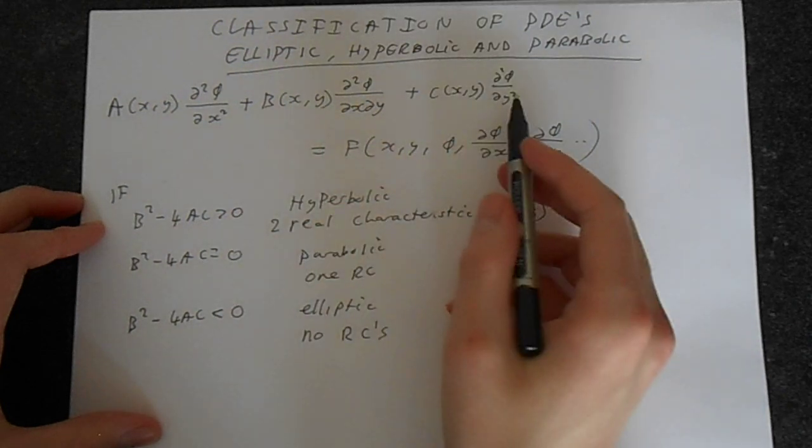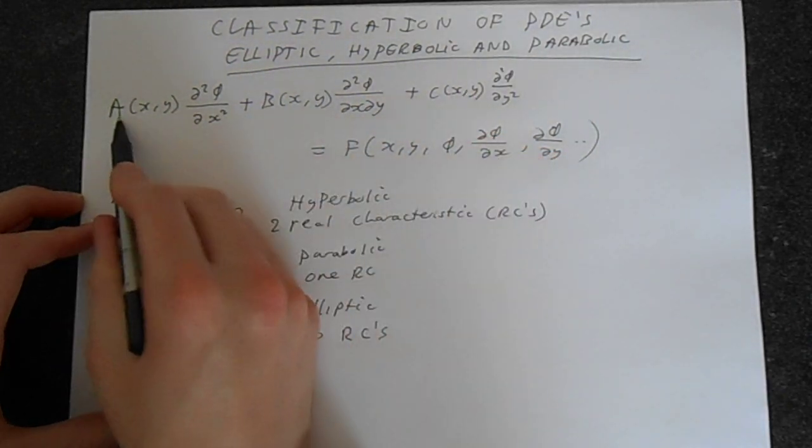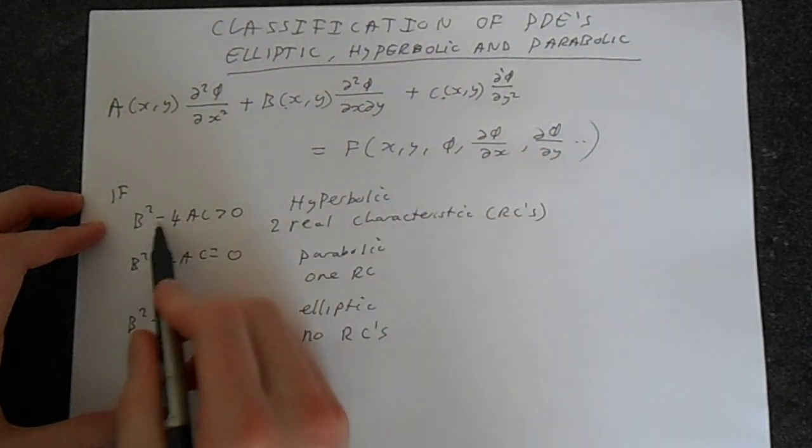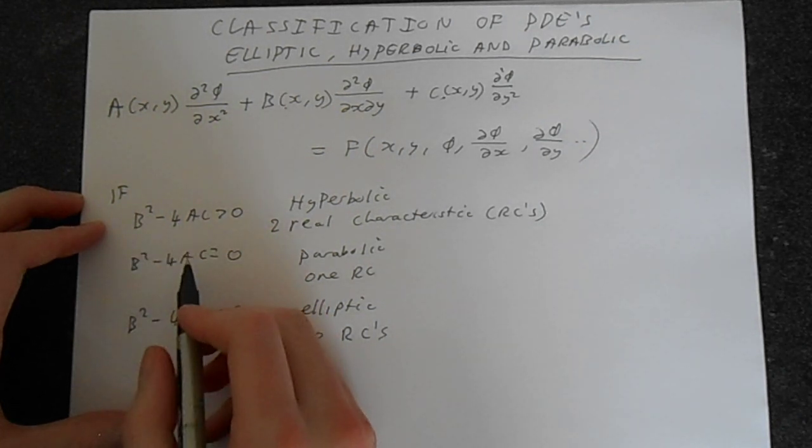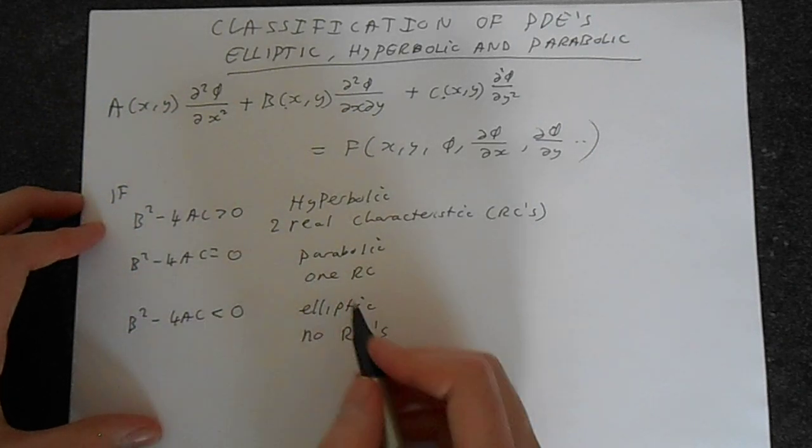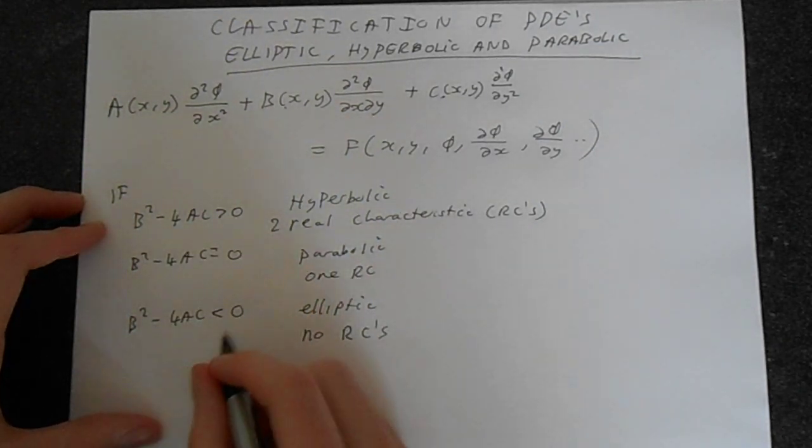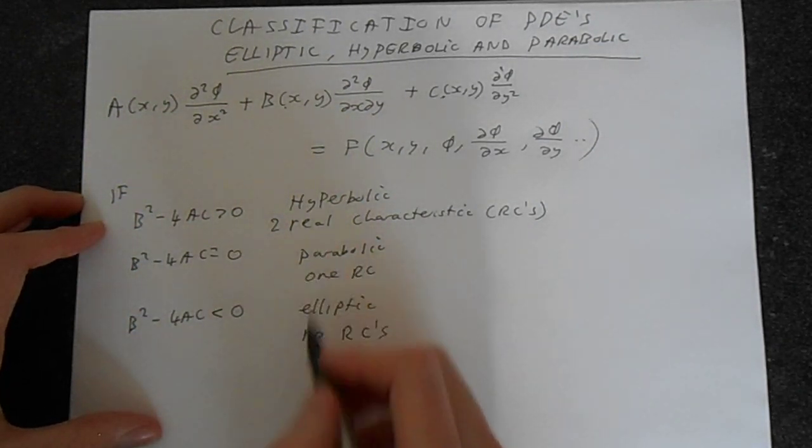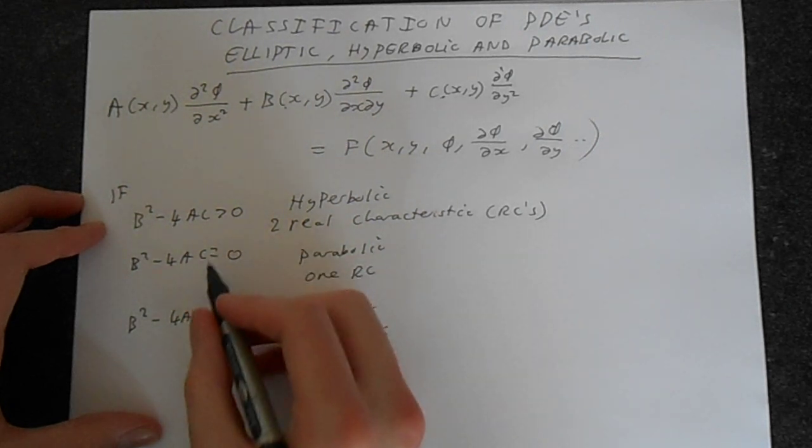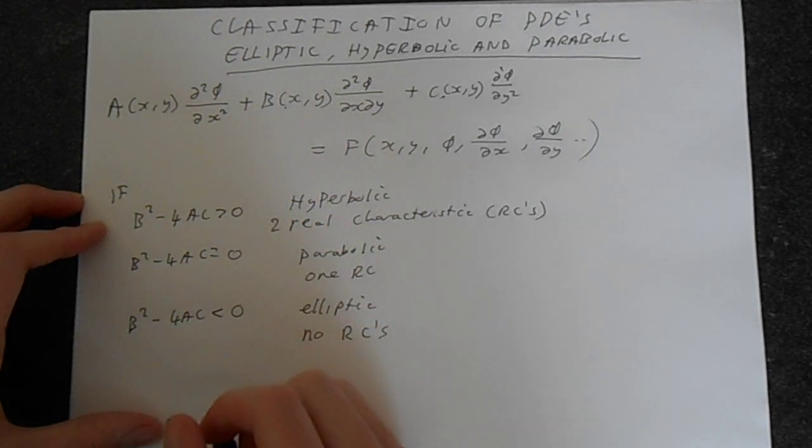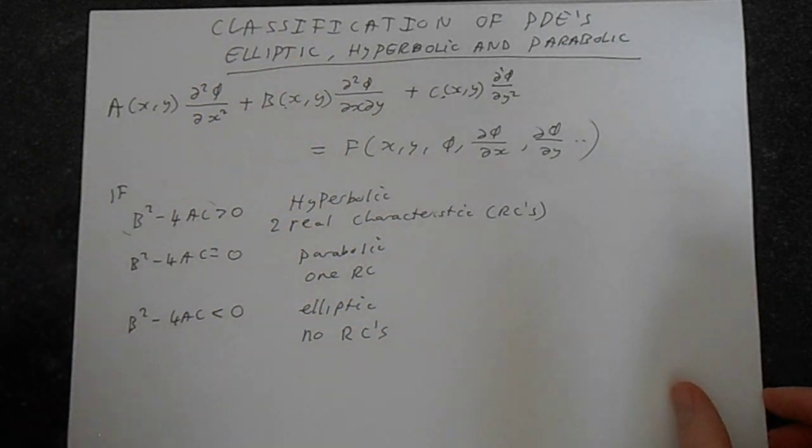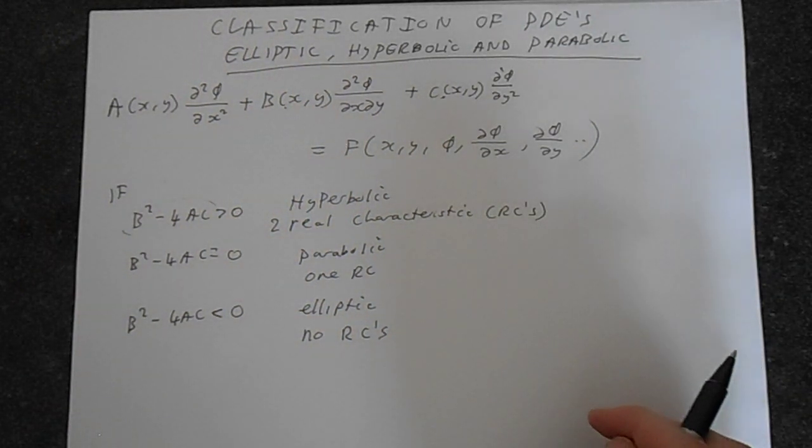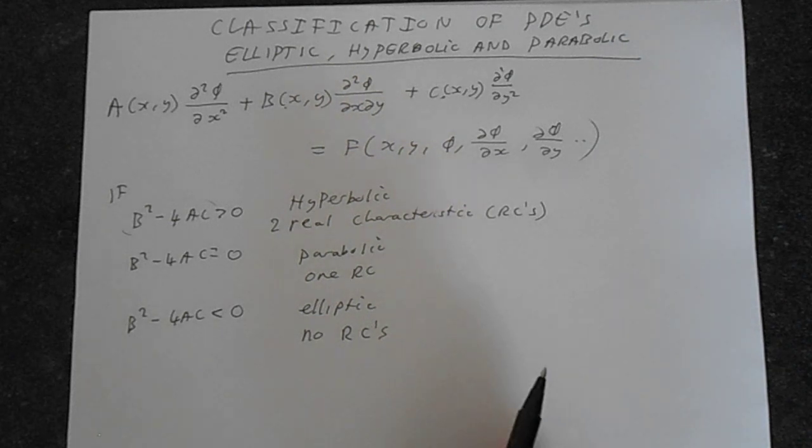So we take this general form, we extract a, b and c, put it into b squared minus 4ac which you should recognize from the quadratic equation and we decide which of these three categories it belongs in by determining if it equals 0 or the sign that this takes when you evaluate it. To make this concept a little bit more clear, let's have a look at an example, or rather two examples.